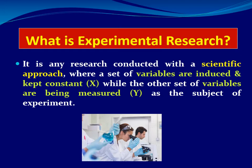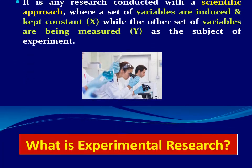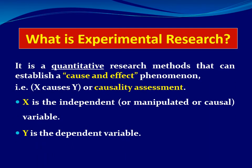The constant variable, which can be modified or induced, is the independent variable. Experimental research is a quantitative method to establish a cause-and-effect relationship between X and Y. This is called causality assessment.